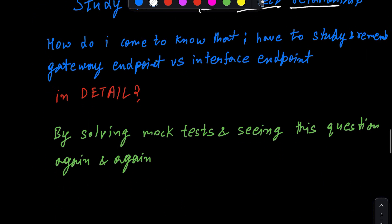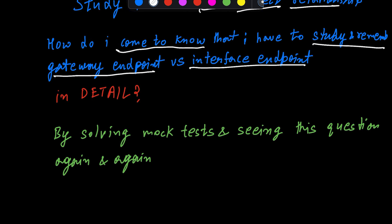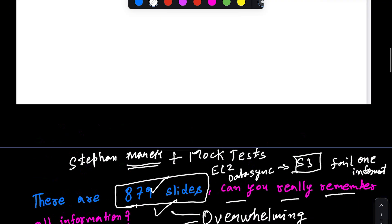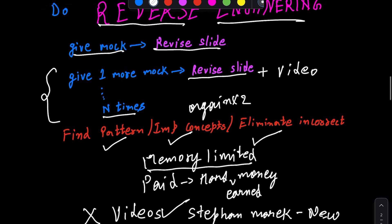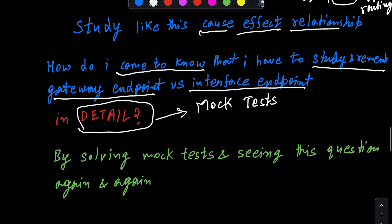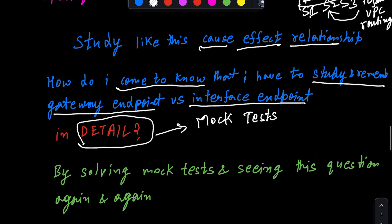How do you know you have to study and remember gateway endpoint versus interface endpoint in detail? This can only be done after doing mock tests. By doing mock tests and revising slides repeatedly, you will come to know that the gateway versus interface endpoint question appears again and again, and similarly, you will discover various other concepts that are repeated and from which questions are always made.